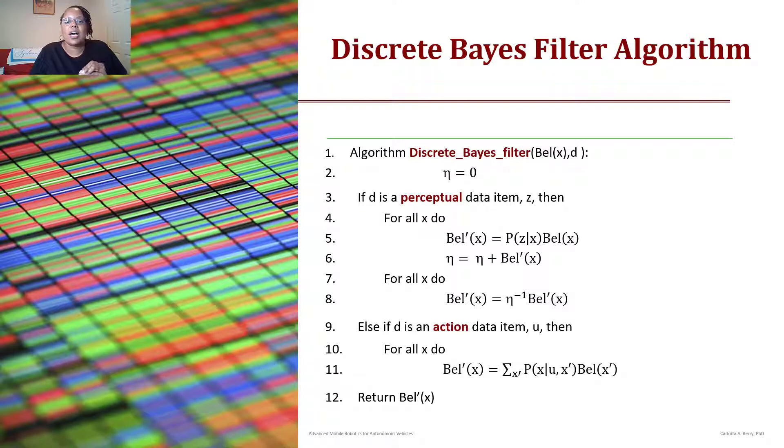First I initialize my normalization constant to be zero. If my data is a perceptual data such as z, then I have a for loop that says the next possible posterior belief state is based upon the probability of z given x times the current belief of x.